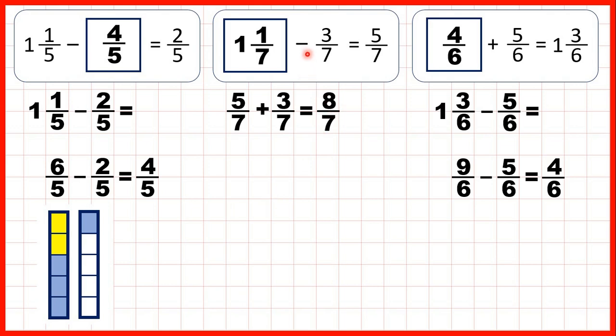Then we knew that three-sevenths had been subtracted from something to leave five-sevenths. If we show the three-sevenths that must have been subtracted in blue, we can see that the total at the start must have been one whole, because we have one whole fraction bar colored in, and one-seventh.